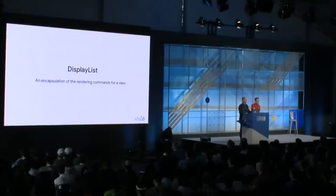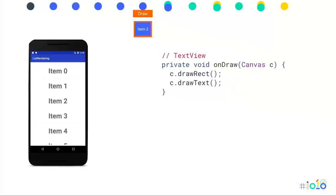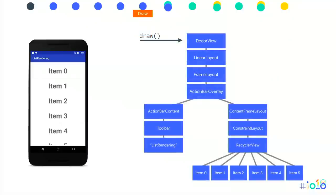A display list is a structure that stores rendering information. When view code calls graphics commands on Canvas — drawBackground, drawDrawable, drawLine — these end up as operations in a display list, a compact way of representing those operations and their parameters. The DecorView didn't change, so it gets the display list for its child, and so on all the way down until it gets to item two, which did change. getDisplayList ends up being a draw call on that view, regenerating its display list via onDraw. The display list for this item contains rect and text information. And the view hierarchy itself is reproduced as a hierarchy of display lists.